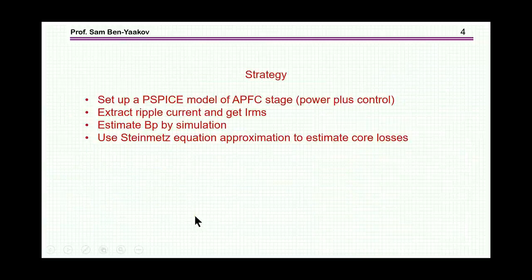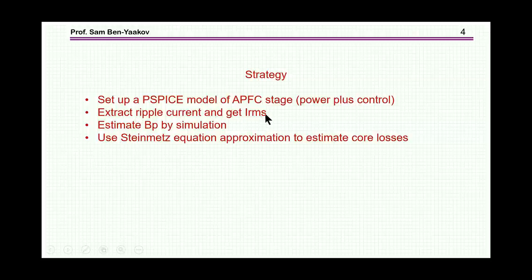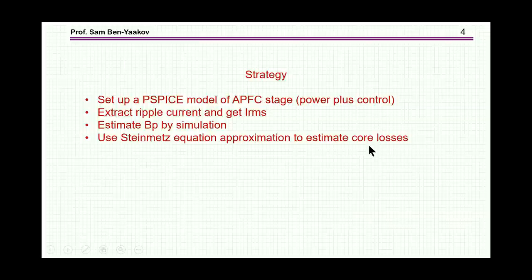The strategy I'm going to use is to set up a PSPICE model of a power factor correction stage, including the power plus the control, then extract the ripple current and get from this the RMS of the high frequency component. I'm going to estimate the deviation of the magnetic flux density by simulation, and then use the Steinmetz equation in order to estimate the core losses.